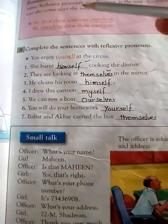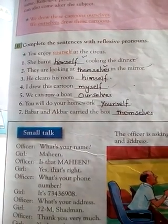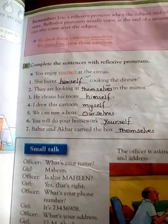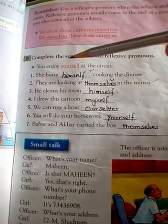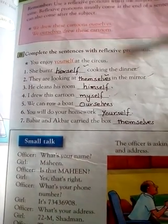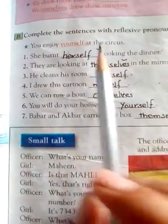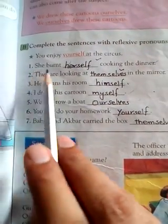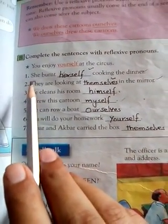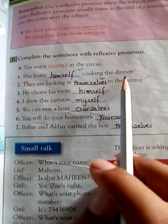Reflexive pronouns اس وقت use کیے جاتے ہیں جب subject اور object same ہوتے ہیں۔ عام طور پر یہ sentence کے end میں use ہوتے ہیں، لیکن کبھی کبھی pronoun کے بعد بھی آ سکتے ہیں۔ Activity B: complete the sentences with the reflexive pronoun۔ لکھنے سے پہلے sentence میں دیکھیں کہ کون سا pronoun use ہو رہا ہے۔ First sentence: 'She burned __ while cooking the dinner۔'